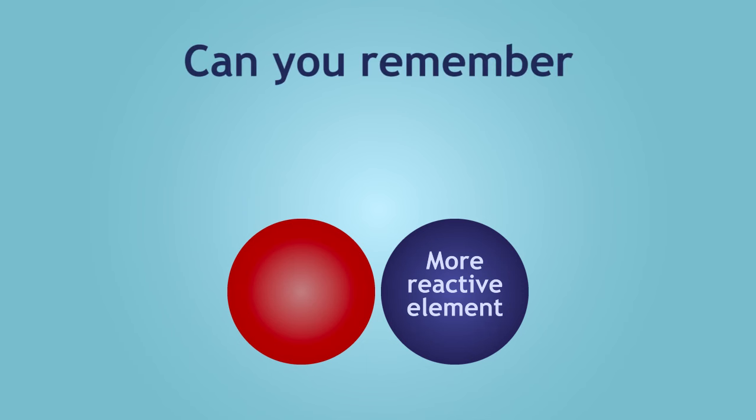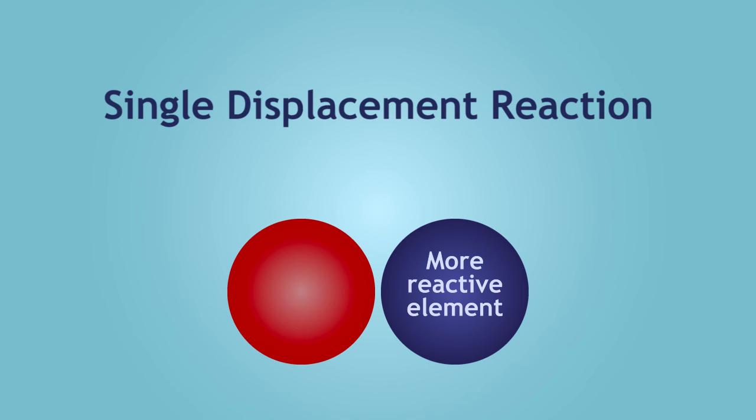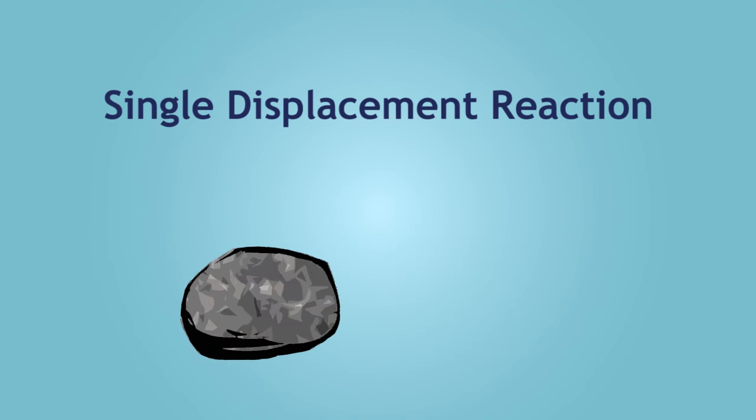Can you remember what this type of reaction is called? Pause, think, and continue when ready. The answer is a single displacement reaction. So to extract a metal from an ore, a single displacement reaction must occur.